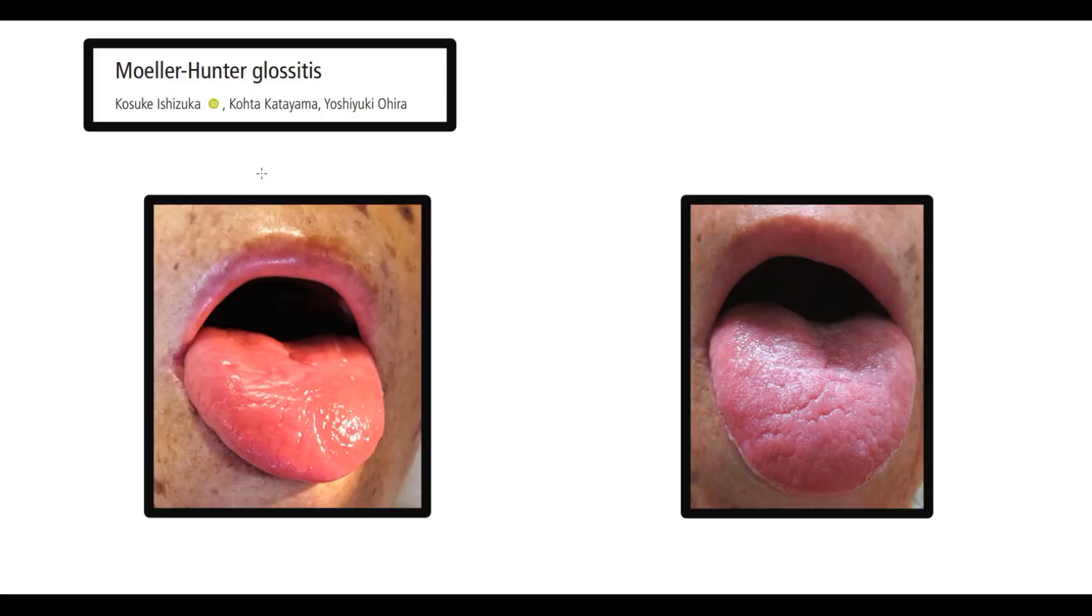On this image we can see Hunter glossitis. As we see, the tongue has a red and smooth appearance, and the reason for it is atrophy of the lingual papillae.